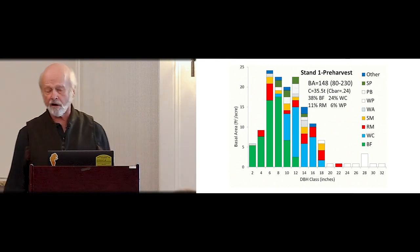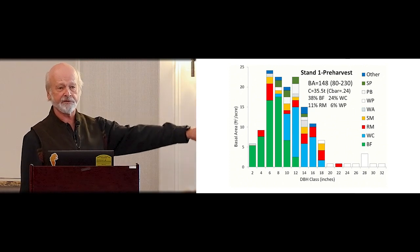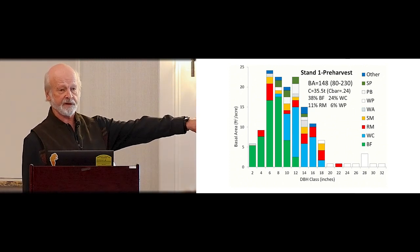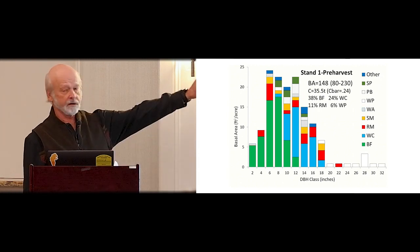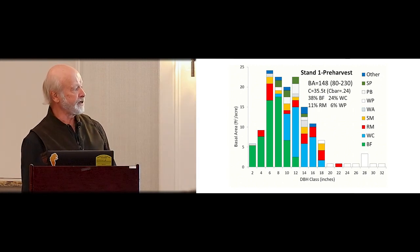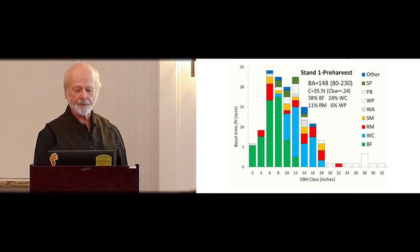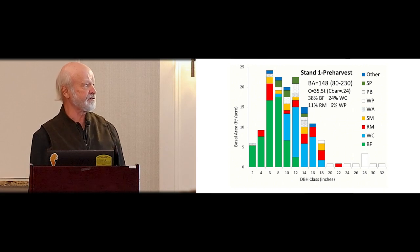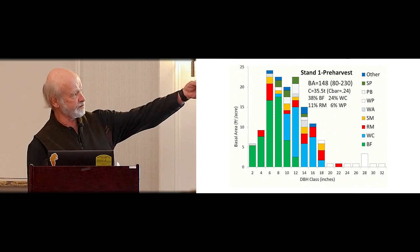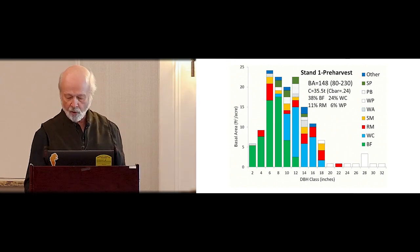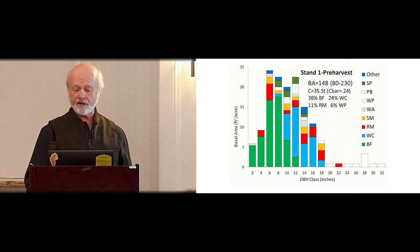Here's the pre-harvest stand structure. The best way to visualize it: if you stack basal area by two-inch classes — not number of trees but basal area, which is proportional to leaf area and canopy closure — then stack them by species, you get a good sense of the structure. The green is fir and the blue is cedar, the dominant species. There's also that component of dying white birch. Basal area 148, so fairly heavily stocked for a mixed-wood stand. There are 35 tons of carbon here — these are English units, no CO2 equivalents.